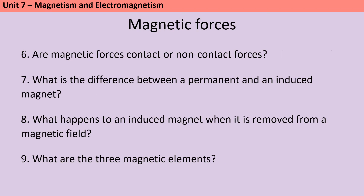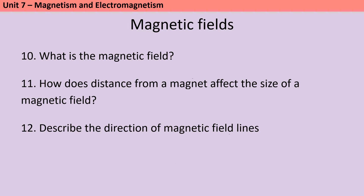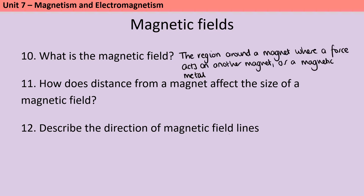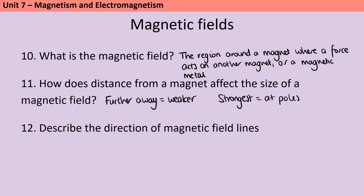Magnetic forces are non-contact forces, and what that means is that the magnetic field is the area around a magnet where a magnetic material like iron or cobalt or nickel will experience a force. The closer that metal is to the magnet, the greater the size of the force will be, and the strongest force is found at the poles of the magnet.